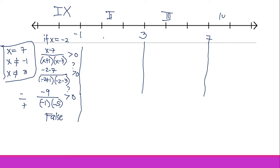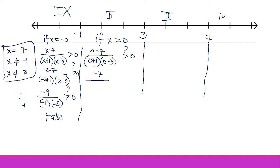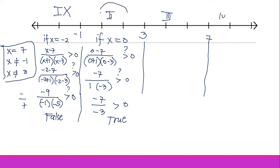Testing Region 2, let x equal 0. We get (0 minus 7) over (0 plus 1)(0 minus 3) equals negative 7 over negative 3, which is positive. That is greater than zero, so this is true — Region 2 is part of our solution.